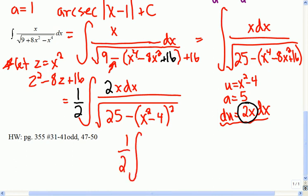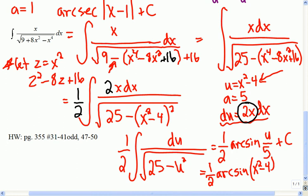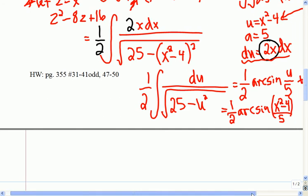So I've got 1 half the integral. On top will be du now. And it'll be 25 minus u squared, which fits nicely into the arcsine's antiderivative. So this will be 1 half the arcsine of u over 5 plus a constant. And u is what we substituted u as. So my final answer would be 1 half the arcsine of x squared minus 4 divided by 5, and of course, I have a constant as well in there.